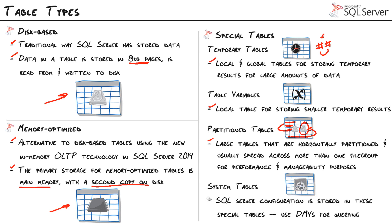We also have system tables, where all of SQL Server's configuration information is stored. We can access this through dynamic management views, which is very handy for things like getting a list of all databases on a server — for example, writing a script that loops through and backs up all databases. There's also one more special table type not listed here: file table.